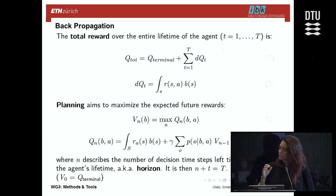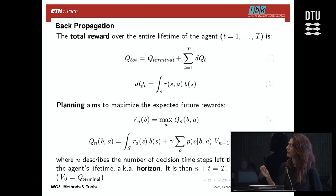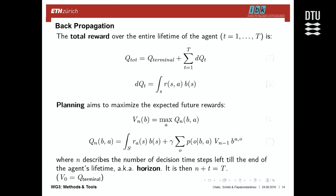Without going into full solution details, figuring out the policy that ensures maximum reward requires solving a recursive problem starting from the end. The problem is solved in terms of horizons — the number of decision steps remaining. A horizon of zero means no steps left; an infinite horizon means long-term planning. We solve recursively, maximizing the expected future reward, which is connected to the belief state and previous time step rewards.